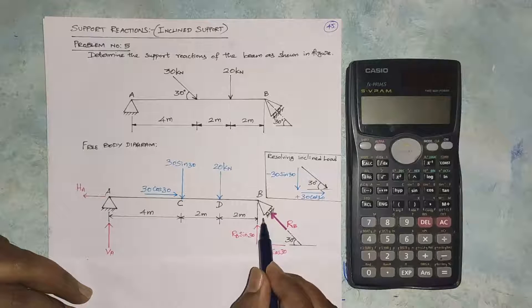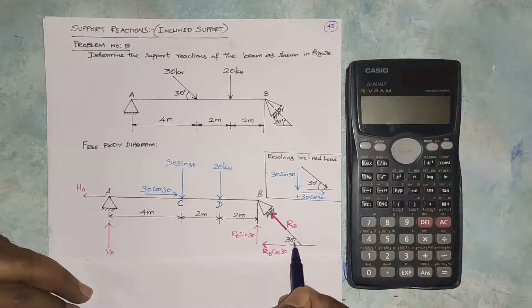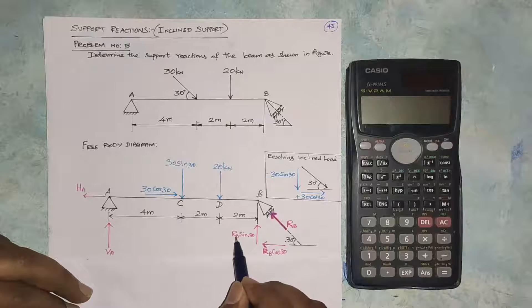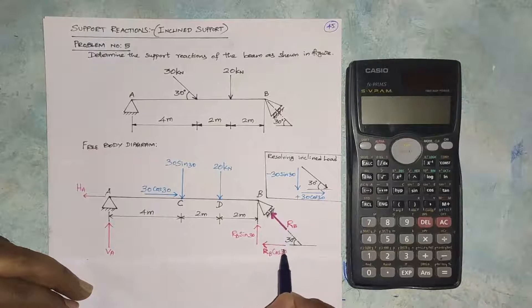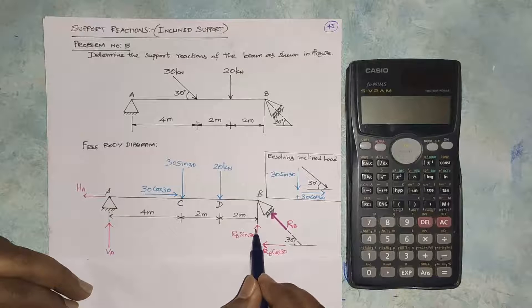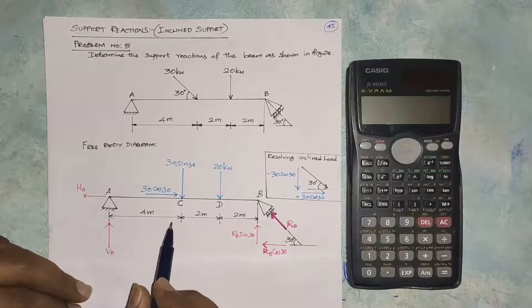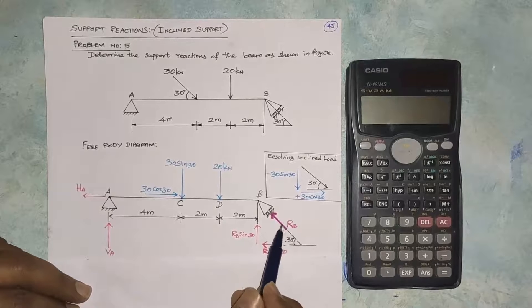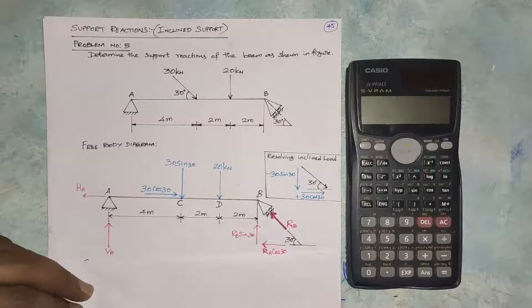We can resolve the inclined reaction RB into horizontal and vertical components. The result of RB at 30 degrees gives RB sin30 and RB cos30. We have horizontal forces and vertical forces — 1, 2, 3, 4 vertical forces. So we apply equilibrium: sum of horizontal forces ΣH = 0, and sum of vertical forces ΣV = 0.